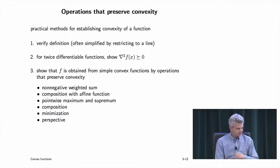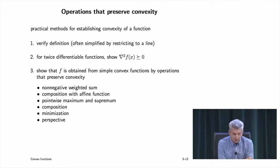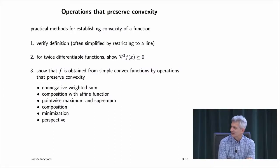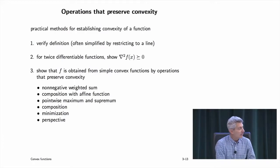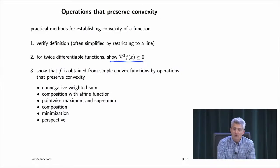Now let's talk about operations that preserve convexity. How do you establish convexity? Sometimes you roll up your sleeves, take x and y and theta, and establish the inequality directly — though this is rarely the right approach. Or you restrict to a line and verify. For twice-differentiable functions, differentiate twice. But formulas quickly become unworkable.